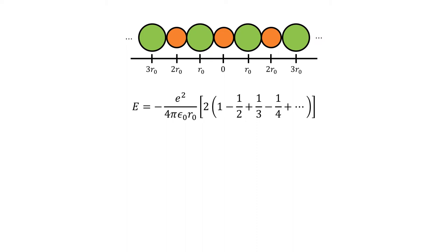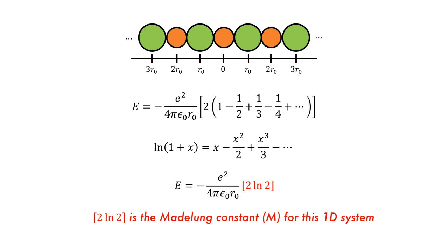This linear array can then be simplified using a Maclaurin expansion. As x is equal to 1, we can simplify the first equation by inserting 2ln2. 2ln2 is then the Madelung constant for this system.